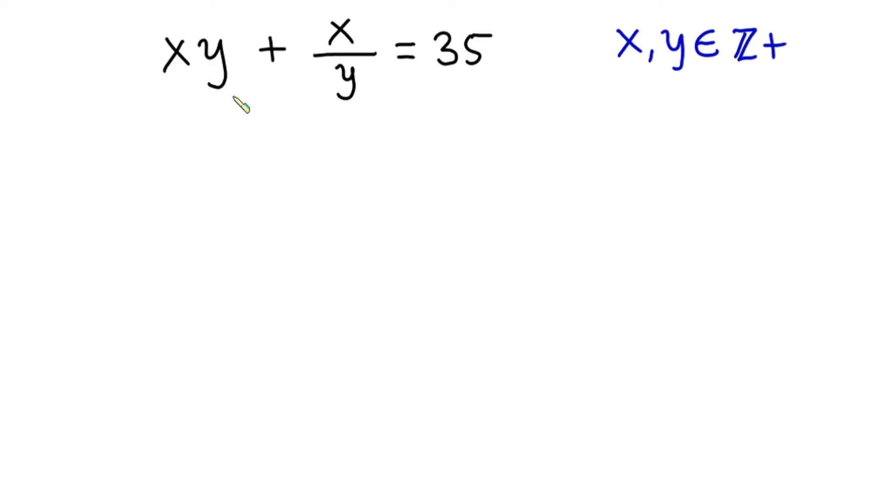Hello everyone, in this video we have this interesting problem: x times y plus x divided by y equals 35. We have to find the values of x and y where x and y are positive integers.